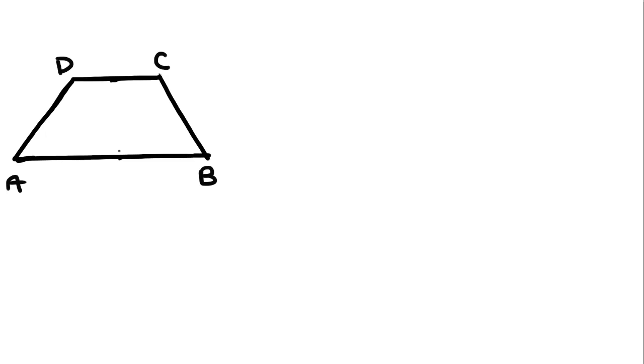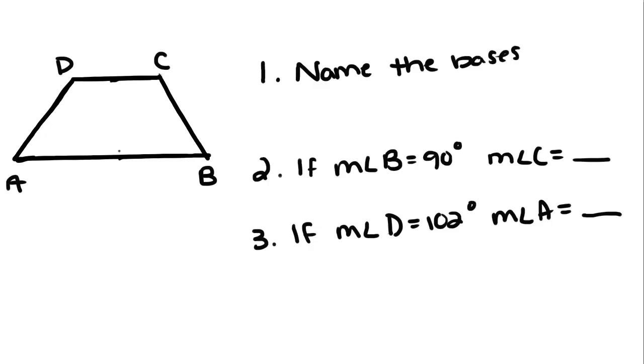So we have trapezoid ABCD. Name the bases. So like we said, the bases are the parallel sides. So these two sides are parallel. So that means that CD and AB are the bases of this trapezoid.